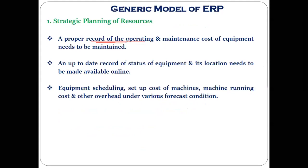For machines, the strategic planning module manages the operating cost of equipment and maintenance costs. Operating cost refers to when the machine is in current operation, and maintenance cost refers to when the machine needs servicing — if a part gets damaged and needs replacing. All these records are kept. Also, keeping an up-to-date record of the status of the equipment and its location — at which area or plant it is working — is also maintained online.